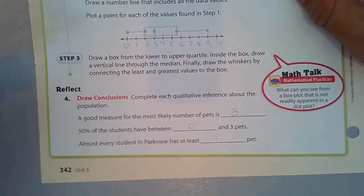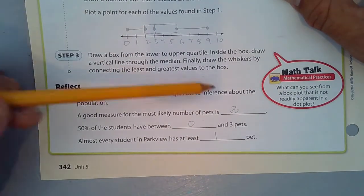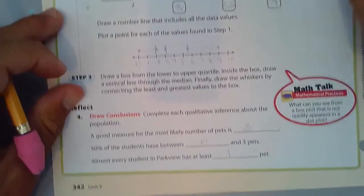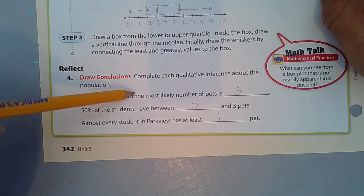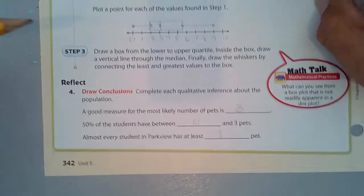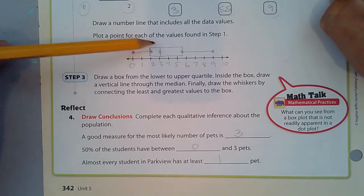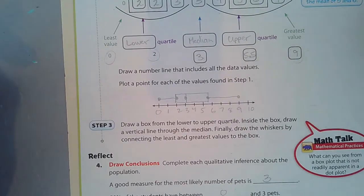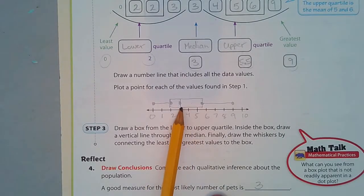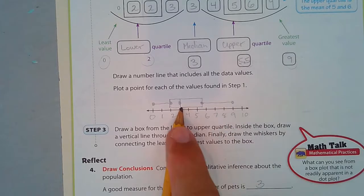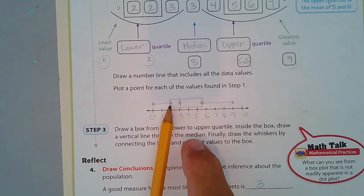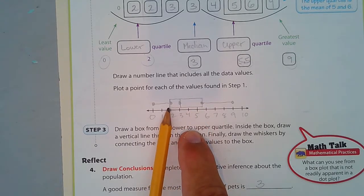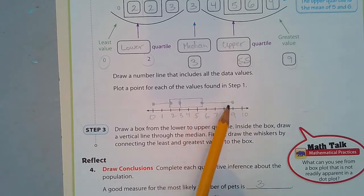Let's reflect and draw some conclusions about this. Complete each qualitative inference about the population. A good measure for the most likely number of pets is three. I would say so. That's the median right there. Fifty percent of the students have between zero and three pets. Here's an important piece of information. This is the median. That means half the data is above, and half the data is below.